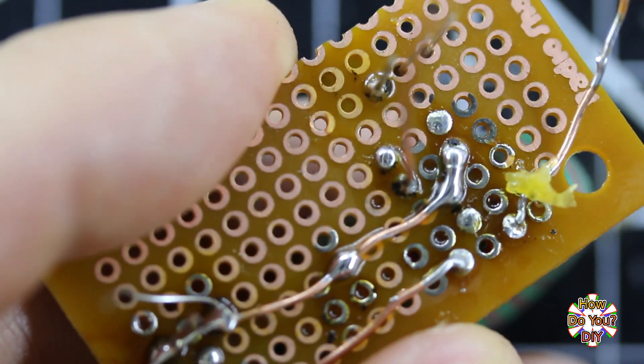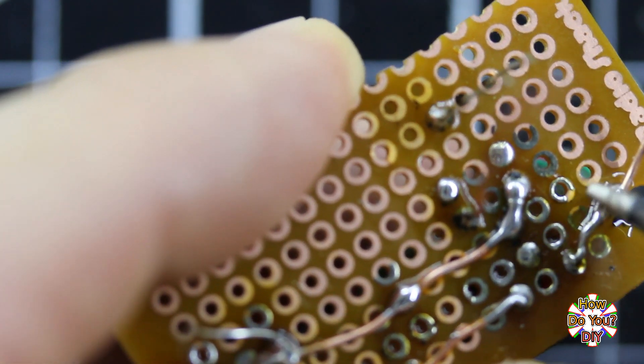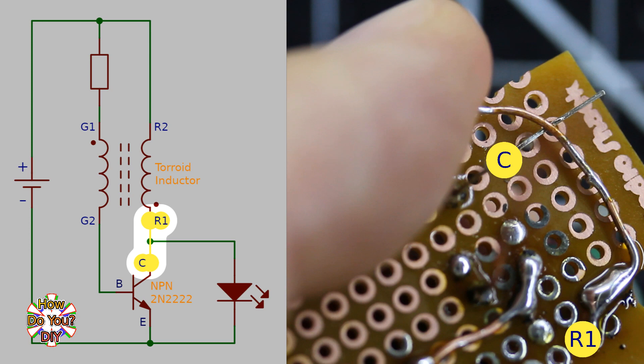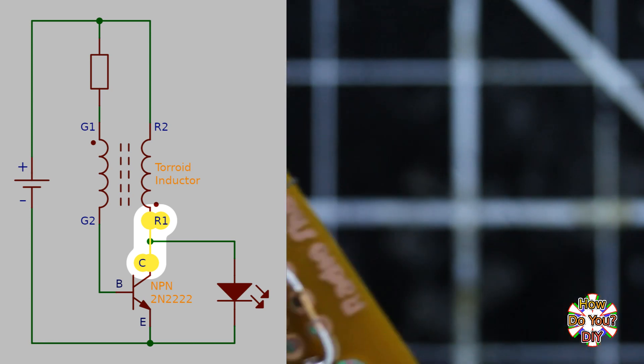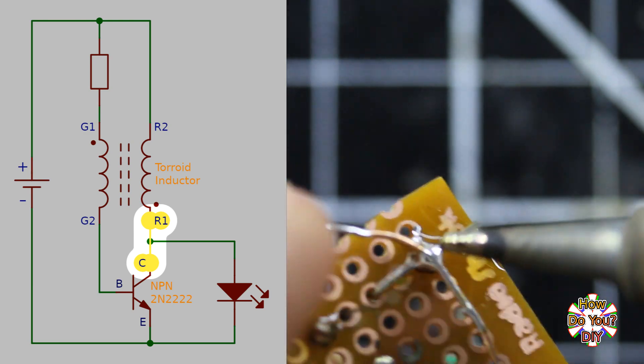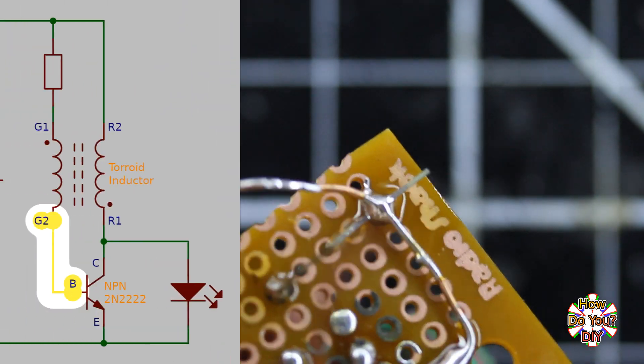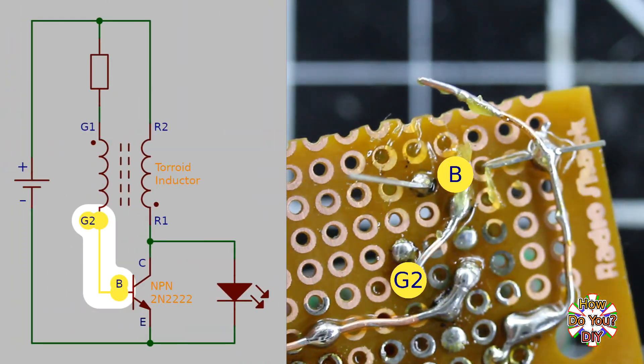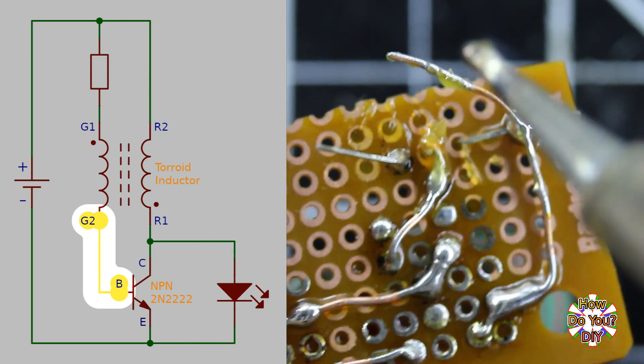Now it's time to solder R1 to its true destination. I route it around to meet up with the collector of the transistor. And G2? I route that around to connect to the base of the transistor. It's the middle pin.